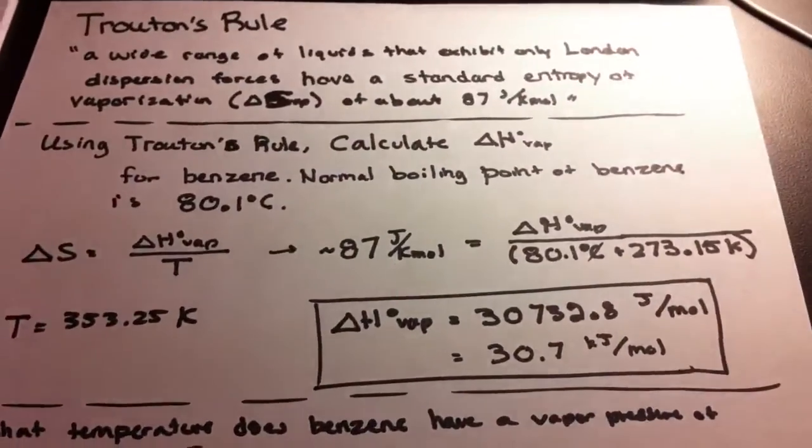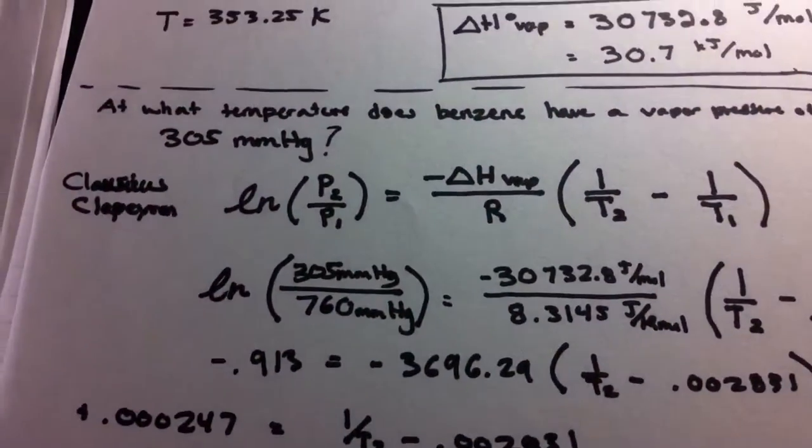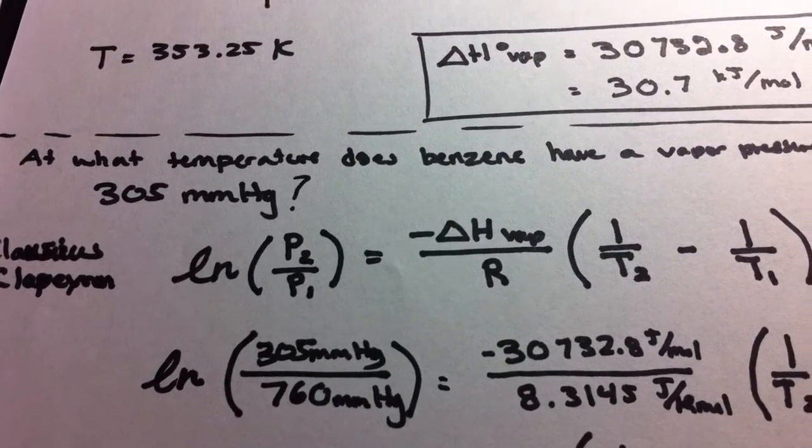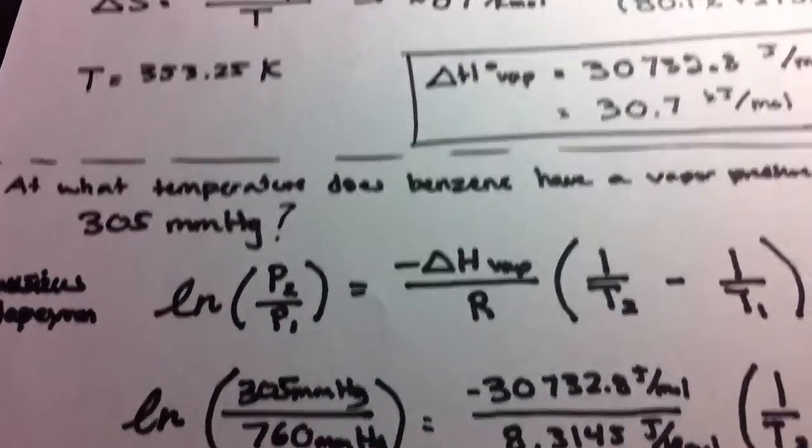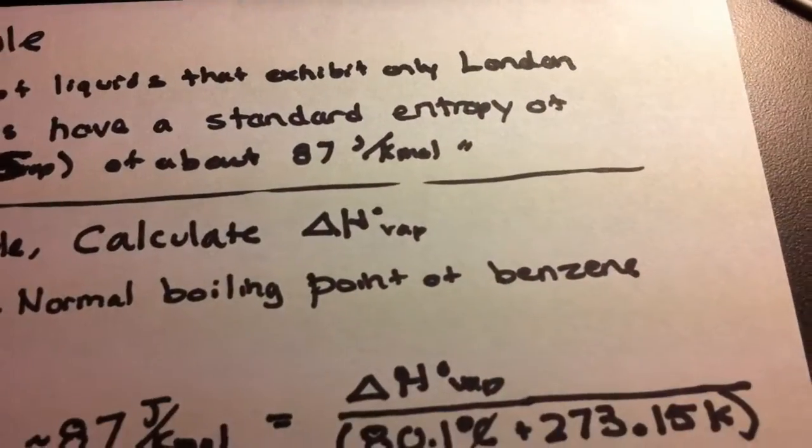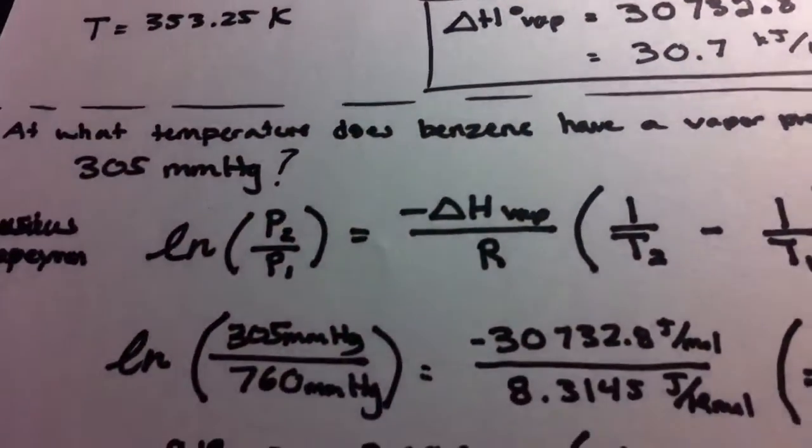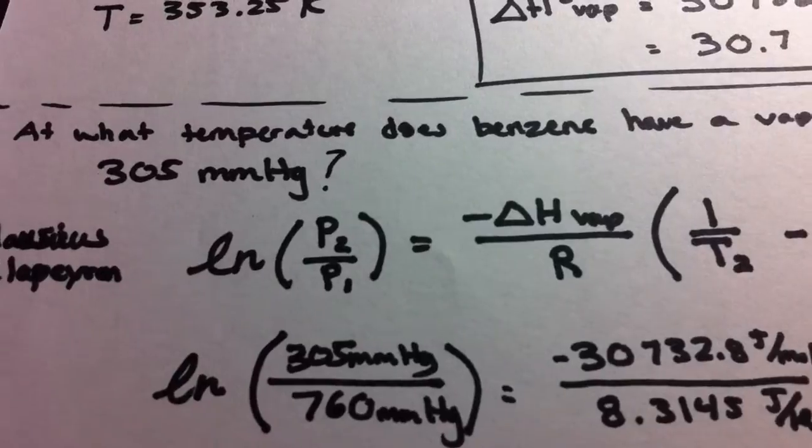We're going to use the first problem as a reference point for this one. Plugging in our values, let's take our first reference point, P, since it is the standard enthalpy, to be 760 milligrams of mercury.